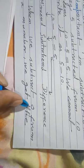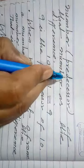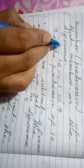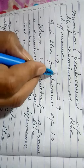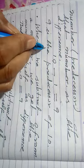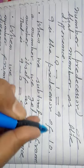When we subtract 1 from a number, we get the predecessor of that number as the difference. For example, 10 minus 1 is the predecessor of 10.